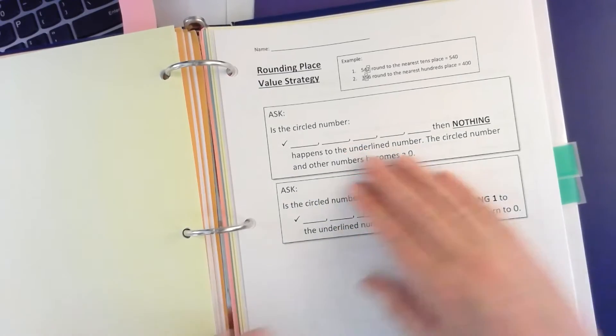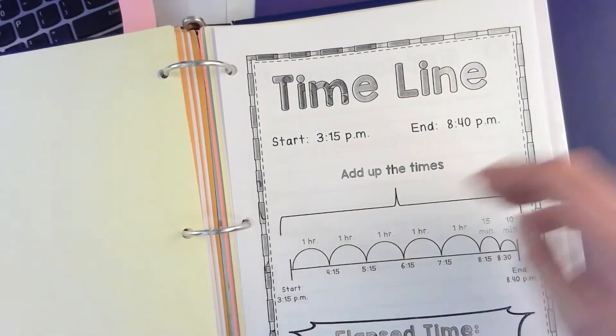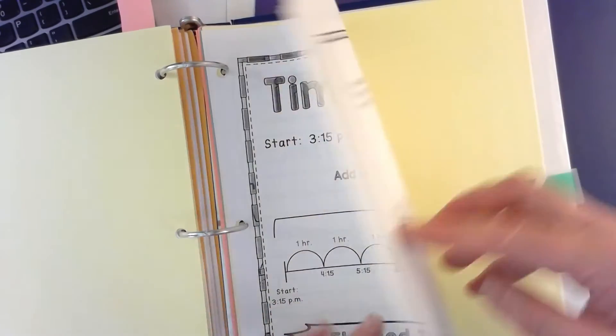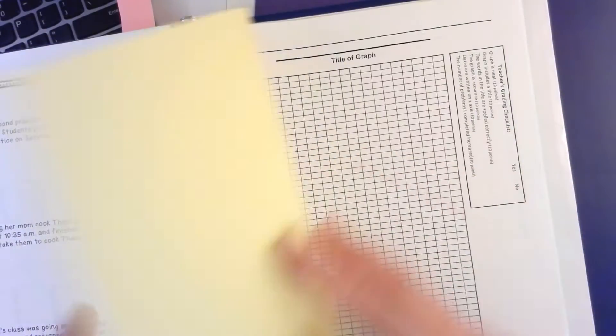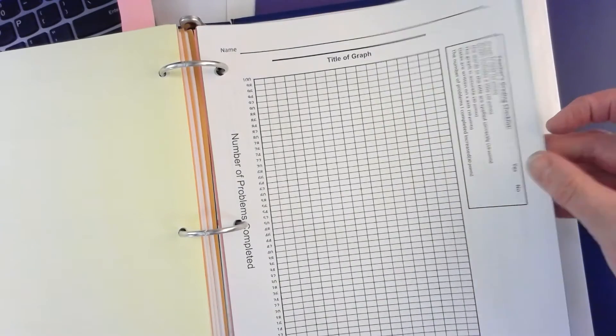Keep going and then we go into rounding and place value. Keep going, then we go into a timeline or elapsed time is what it's called.